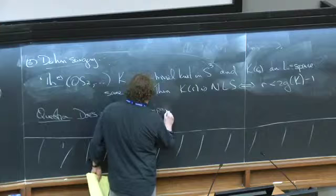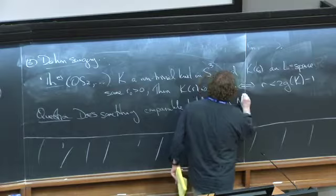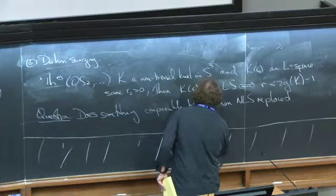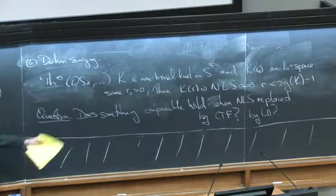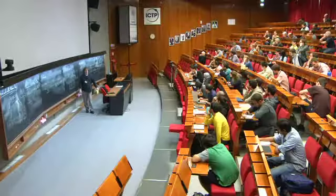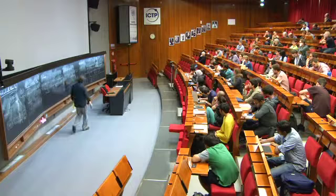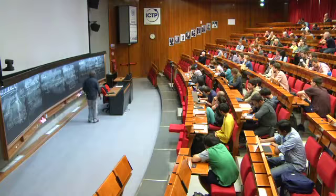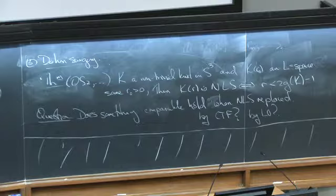So that immediately you come up with a question: can you prove something comparable? Does something comparable hold when NLS is replaced by CTF or by LO? So there's, this is definitive, right? This tells you exactly what's happening for Dehn surgery on knots in S³ for giving L-spaces. In fact, the recent work of Hanselman, Rasmussen, Rasmussen and Watson, as a group and in subsets, have extended this to a much more general situation than knots in S³.